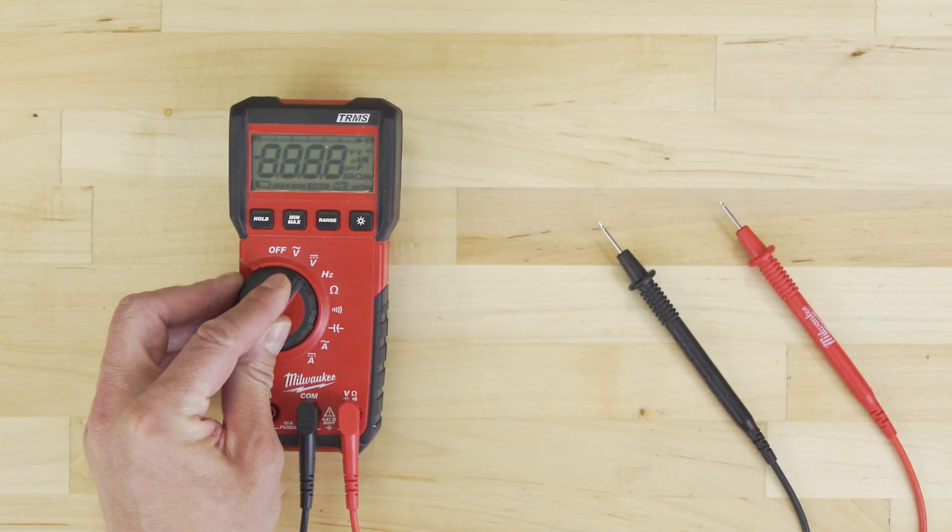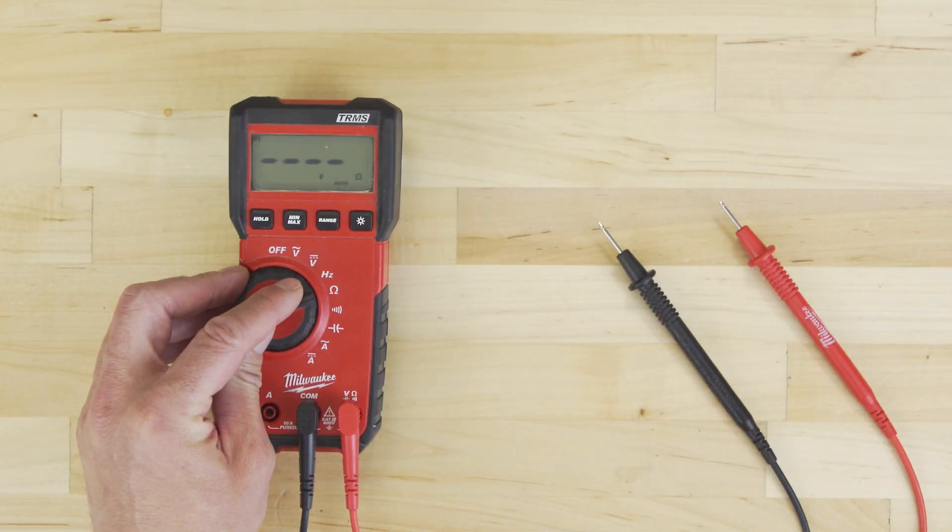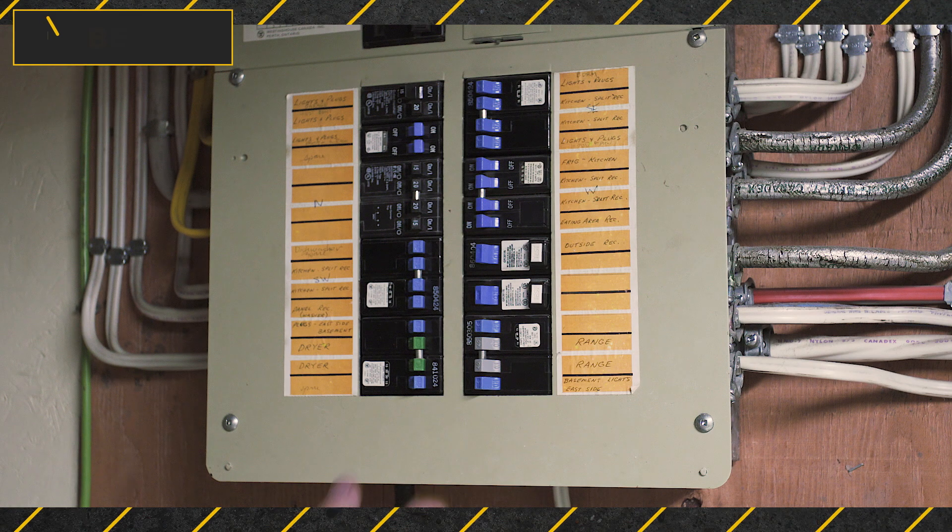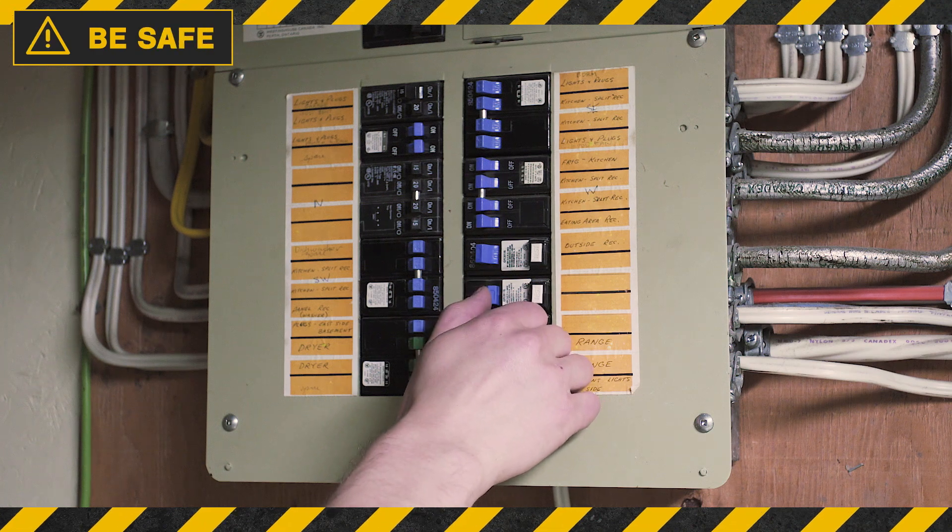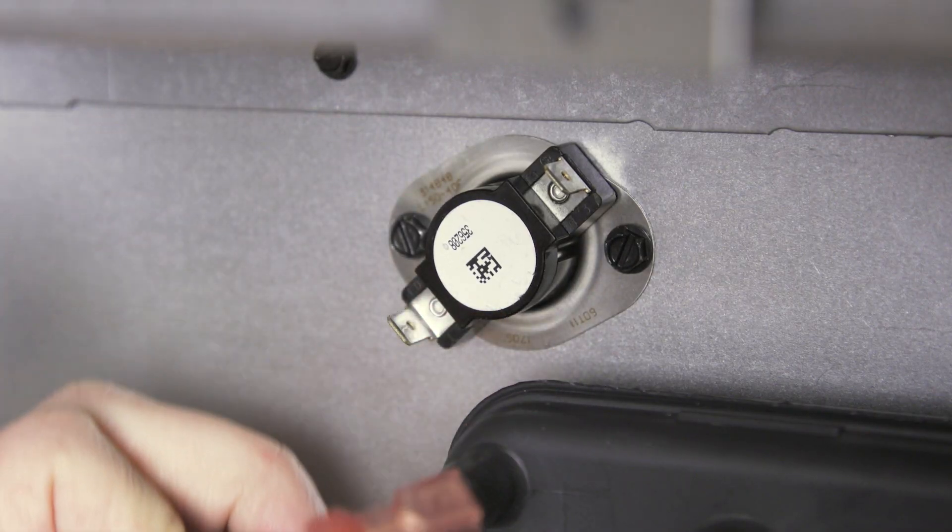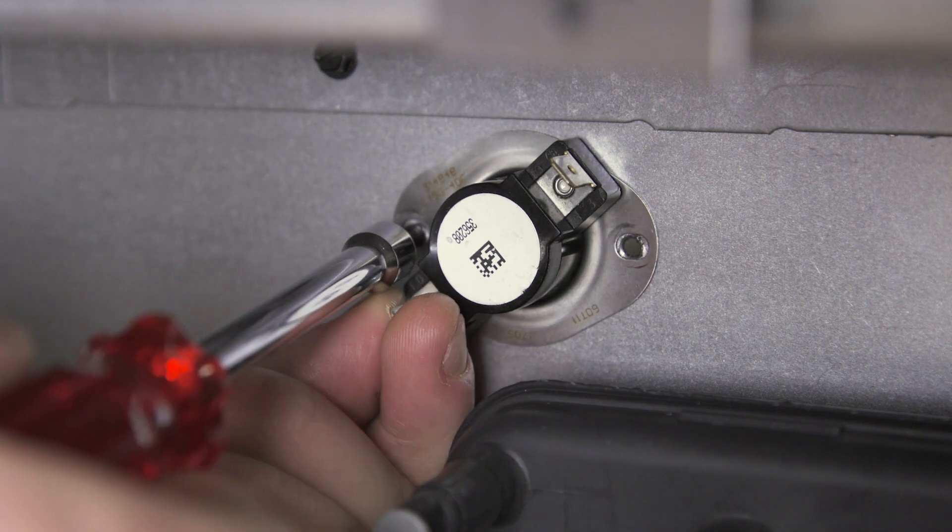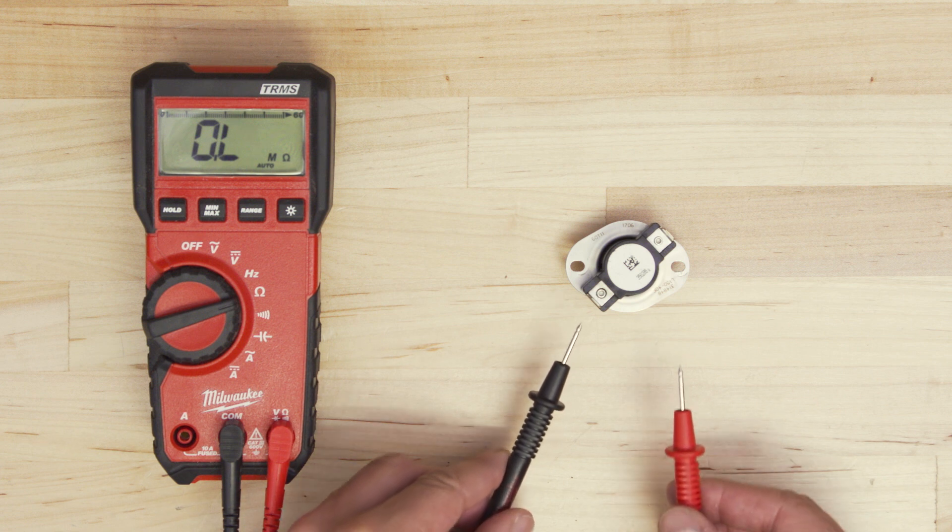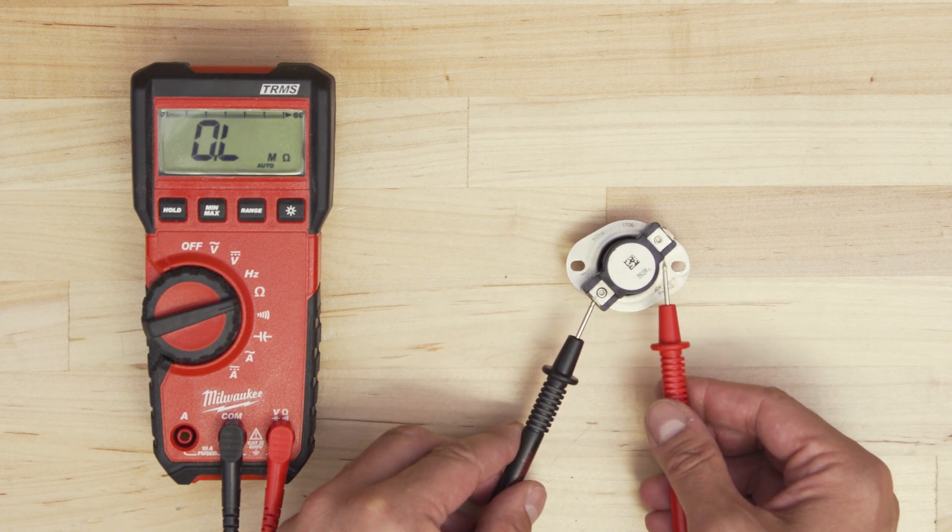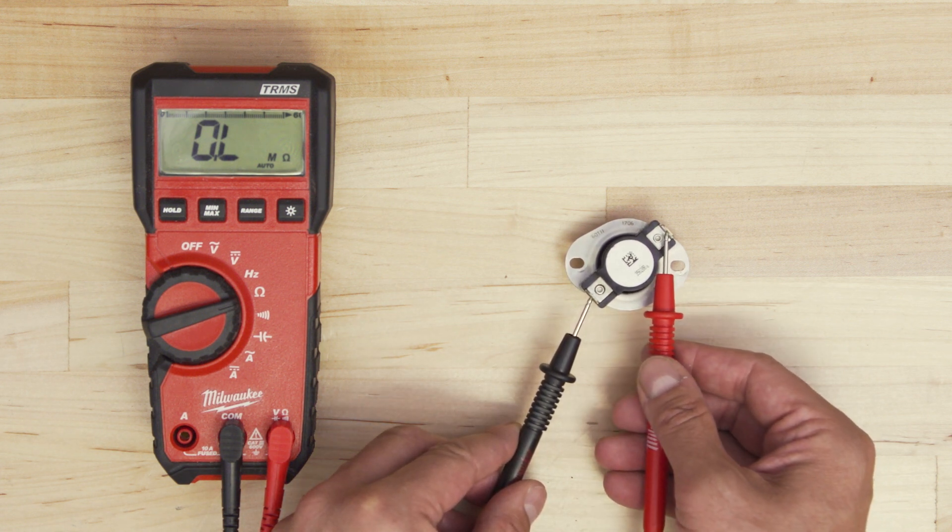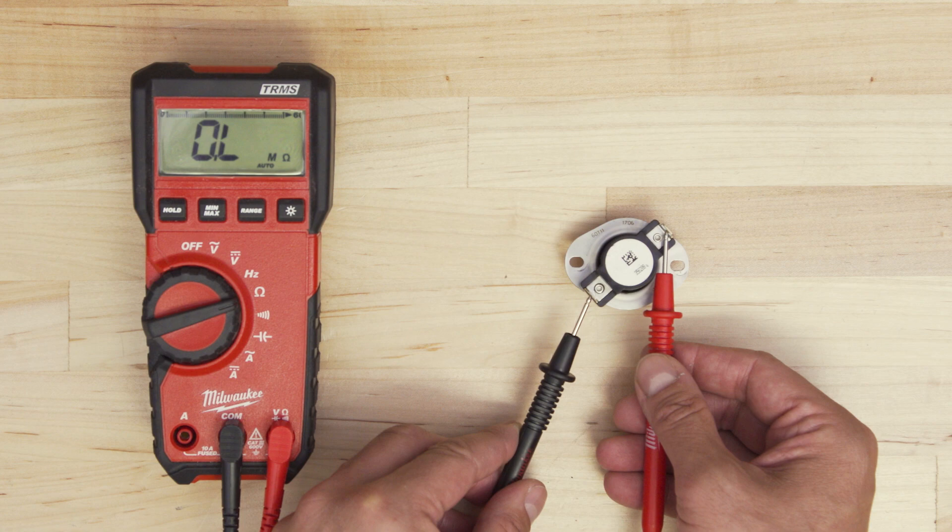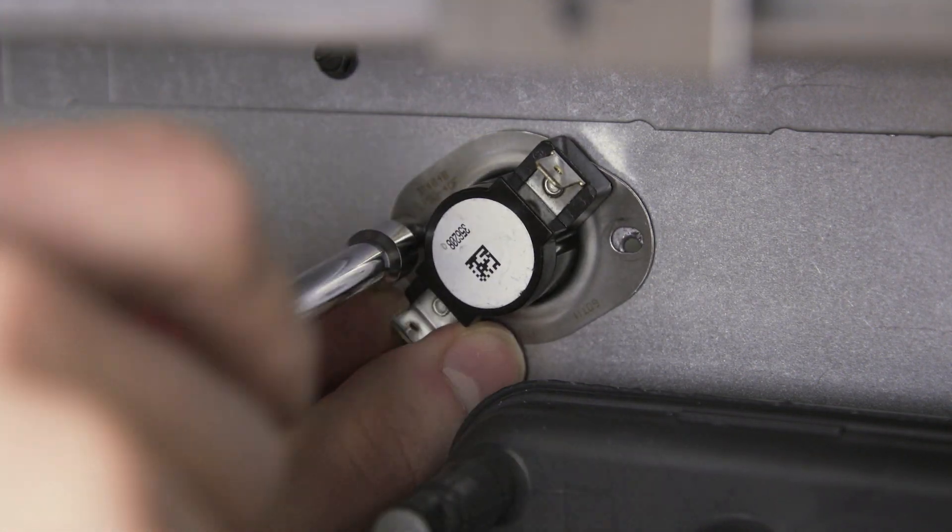To test a component for continuity, first set the multimeter to the ohms or resistance with tone setting. Safely disconnect the power, and remove the wires or connectors. Now remove the component, or isolate it. Next, touch each probe to each component terminal. If there is no continuity, then the multimeter will display OL, or open loop. This means the component will need to be replaced.